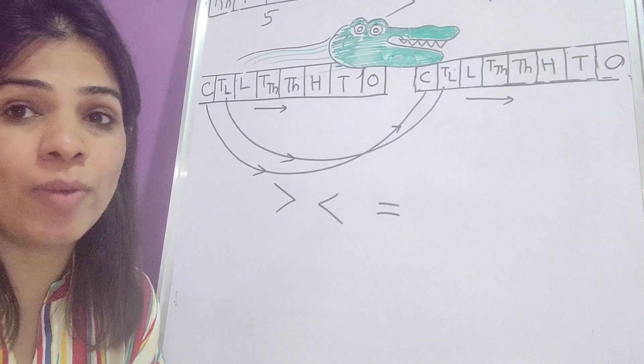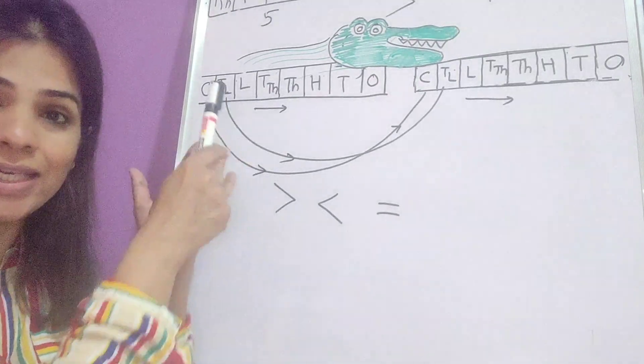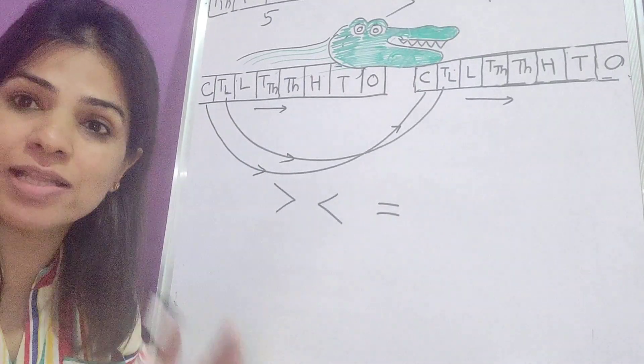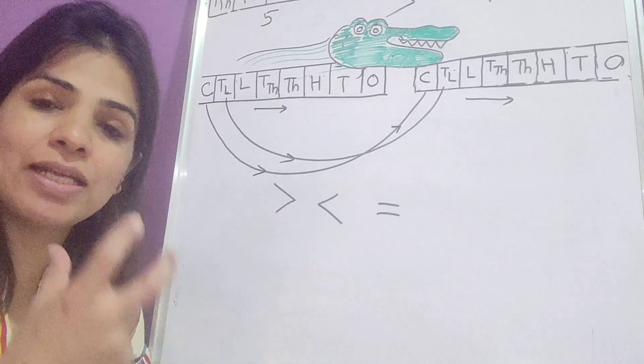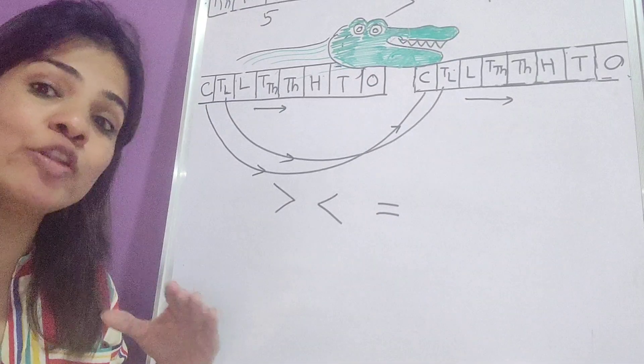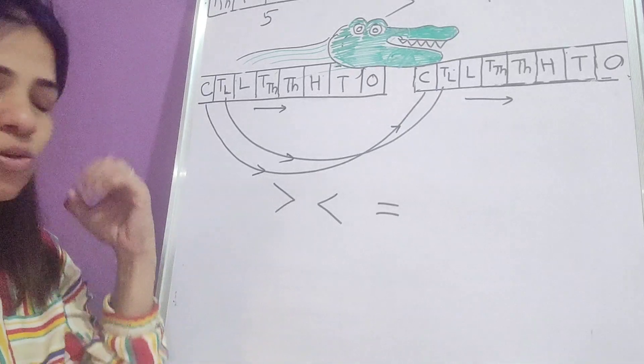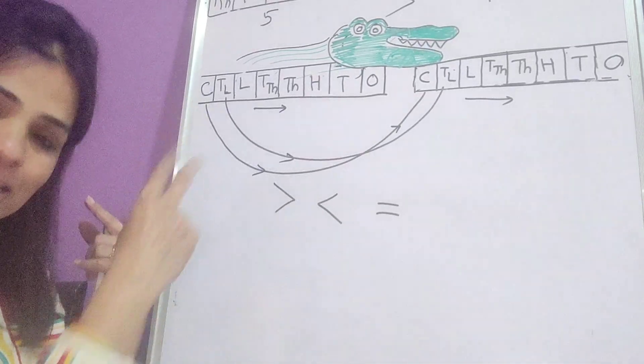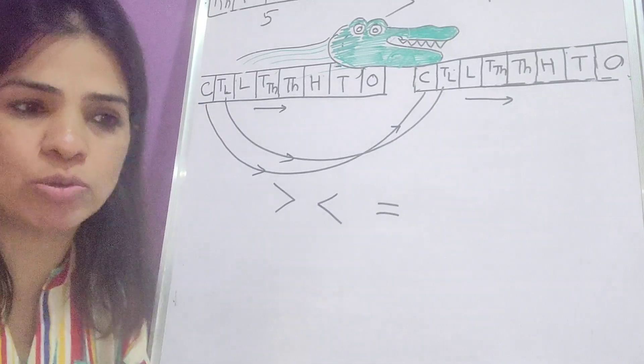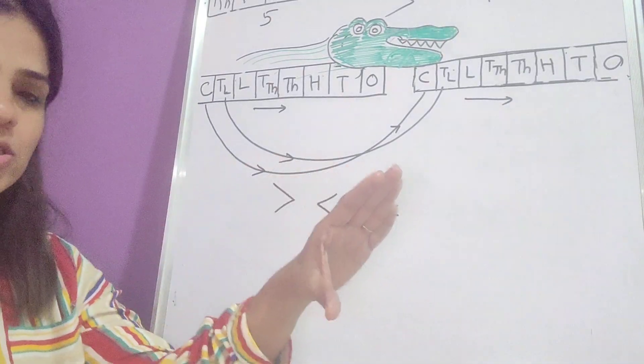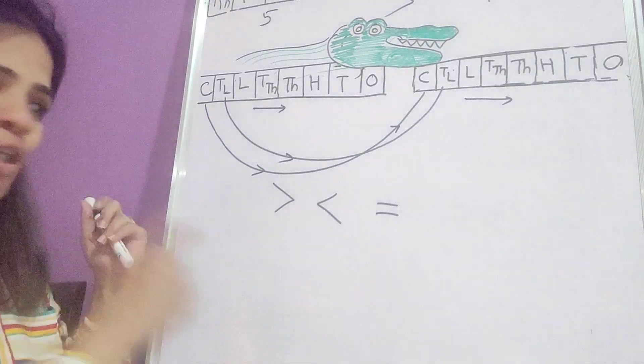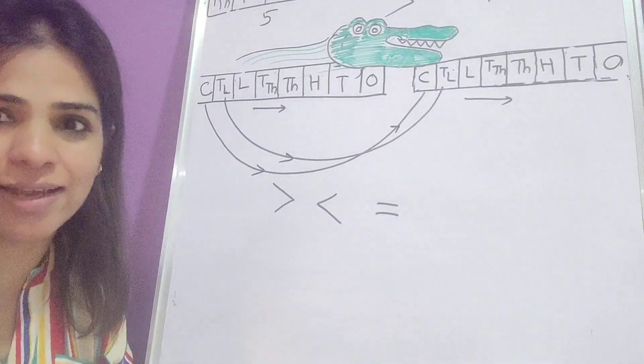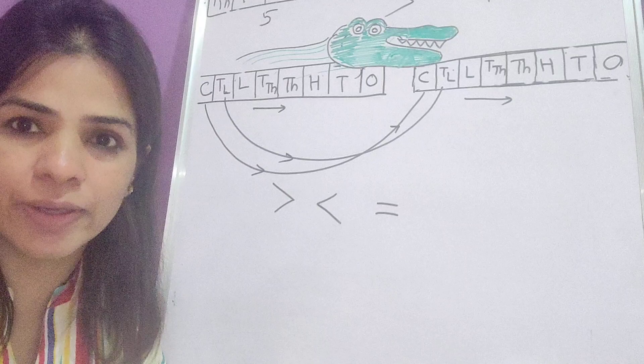Why am I stressing so much on showing the sign and doing this comparison? Because last year I observed that many times, even though you judge correctly which is the bigger number, but then you get confused which sign to put. Just remember the alligator's mouth. Wherever there is a bigger number, just put the alligator's mouth there. Automatically you will be putting this sign. And obviously when the numbers are equal, they are equal.